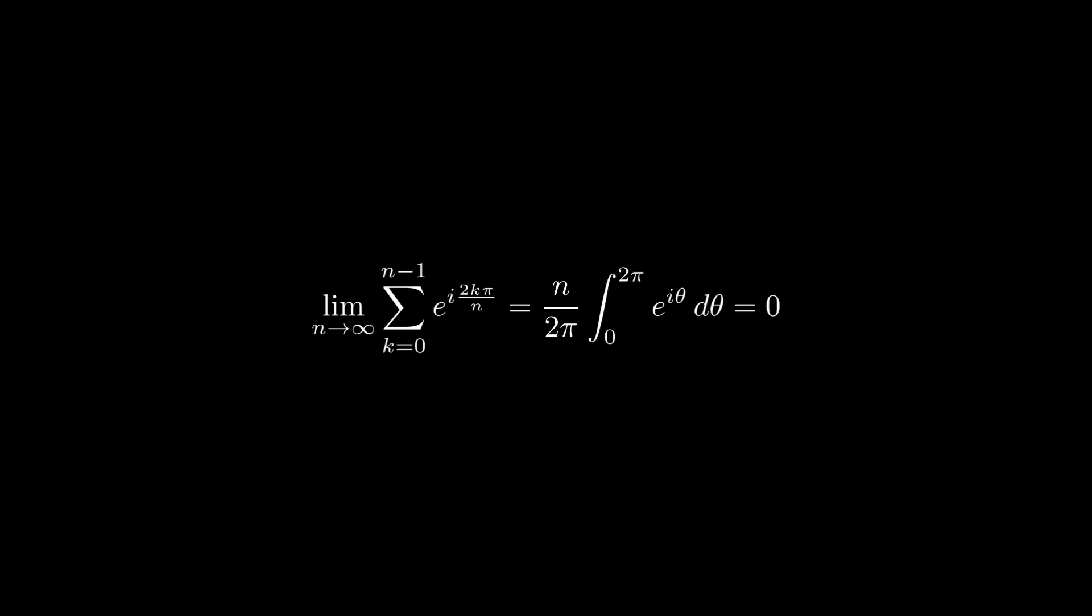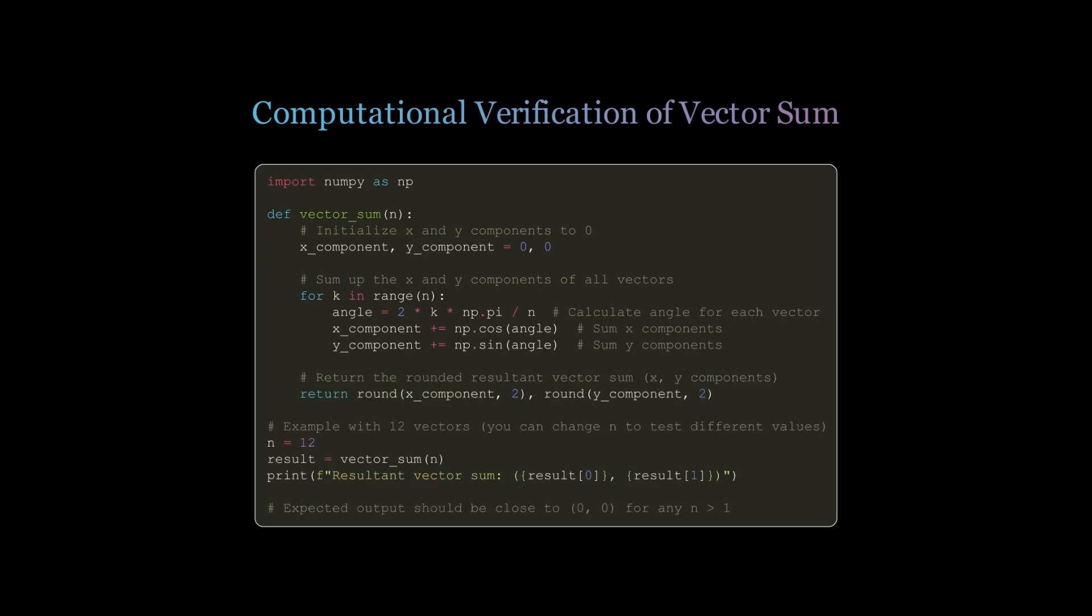For my programming friends, we might not prefer this detailed proof or for anyone looking to verify the result computationally. Here's a Python code snippet you can use to confirm the outcome. The code calculates the sum of n unit vectors evenly spaced around the circle. By setting n equals 12, you should see the result is nearly 0, confirming that the vectors balance out as expected. You can change n to any positive integer greater than 1, just to see the effect of different number of vectors.